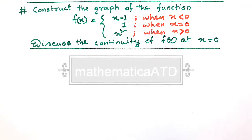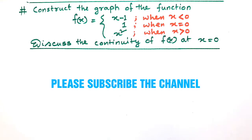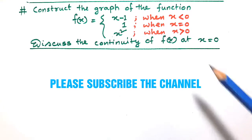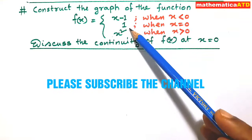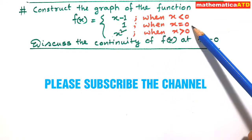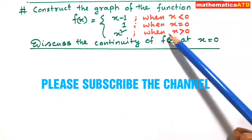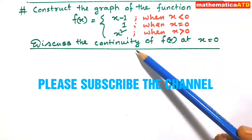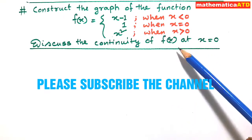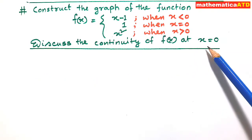Dear friends, we shall now construct the graph of the function: f(x) = x minus 1 when x is less than 0, f(x) = 1 when x is equal to 0, and f(x) = x squared when x is greater than 0. Also, we shall discuss the continuity of the function f(x) at x is equal to 0.